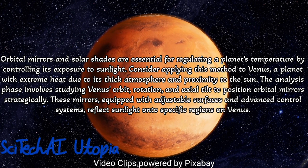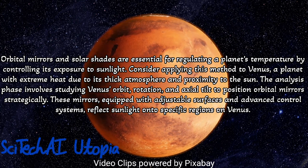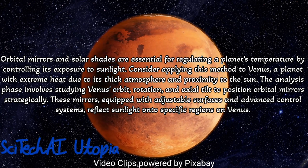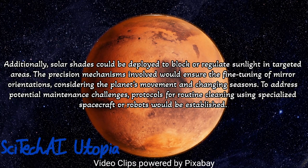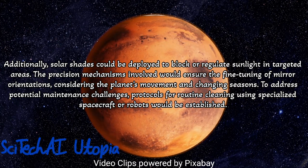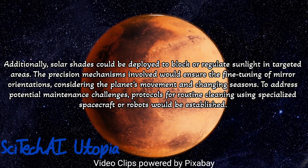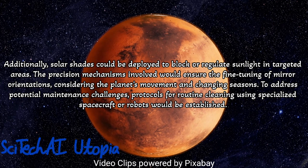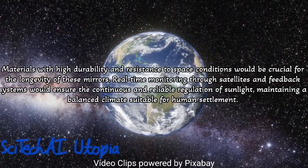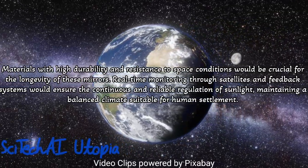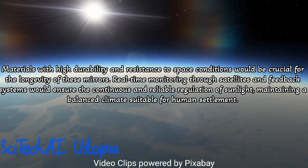Method 2: Orbital Mirrors. Launch a network of large mirrors into orbit around the target planet, strategically positioned to intercept and redirect sunlight. Utilize precision orbital calculations to ensure optimal sunlight redirection, avoiding overcooling or overheating of specific regions. Implement a dynamic control system to adjust the orientation of mirrors, optimizing sunlight distribution based on the planet's rotation and orbit. Consider automated maintenance systems to address dust accumulation on mirror surfaces, and establish a comprehensive power supply system, potentially incorporating solar panels or other sustainable energy sources.